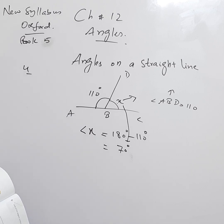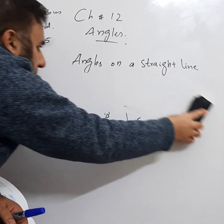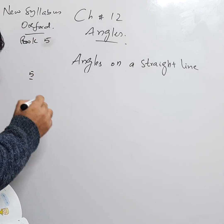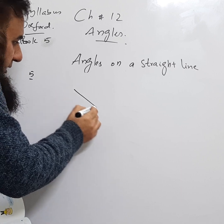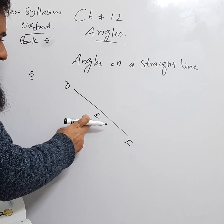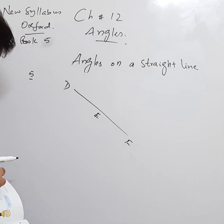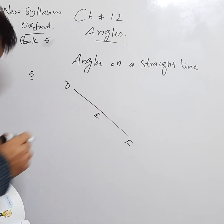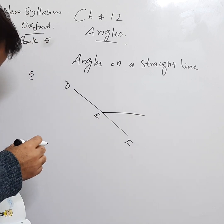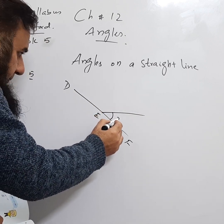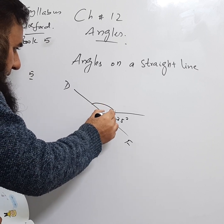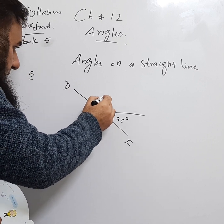Example number five: DEF is a straight line, given like this — D, E, F — with E as the middle vertex. Find angle y. This line is given, and they say this angle is 35°. How much is angle y?